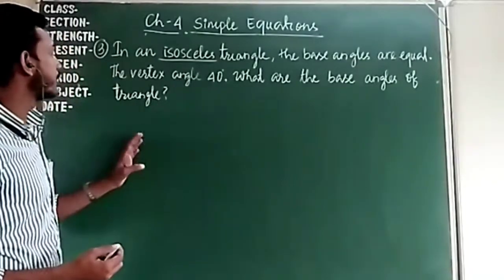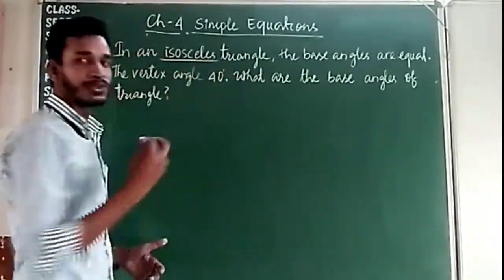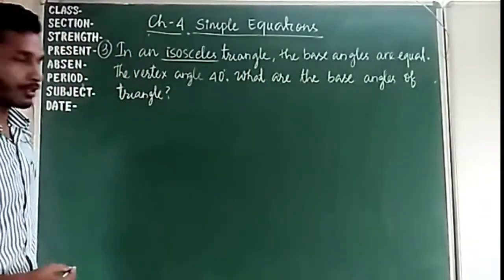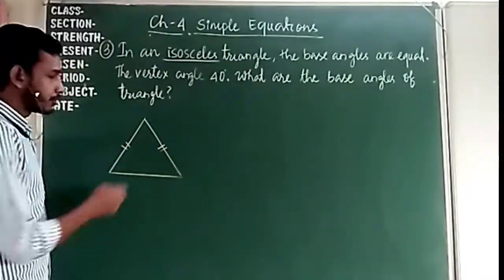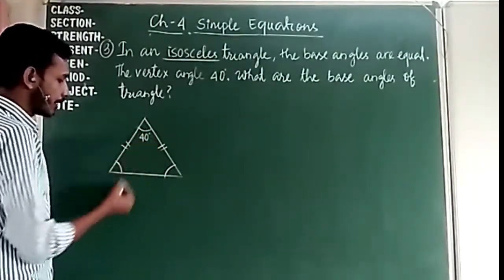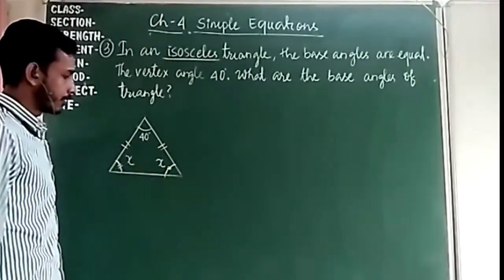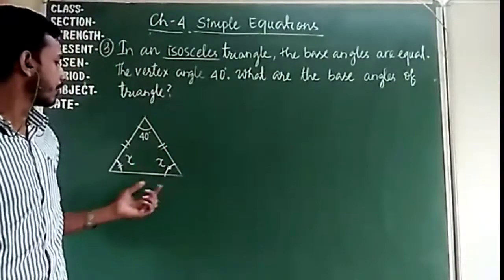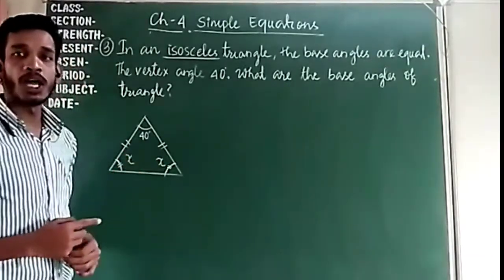Let's solve the next question. In an isosceles triangle, the base angles are equal. The vertex angle is 40 degrees — what are the base angles? Let's draw an isosceles triangle where the two equal sides meet at the vertex. The two base angles are equal, so let each base angle be x. We know the sum of all angles of a triangle is 180 degrees.